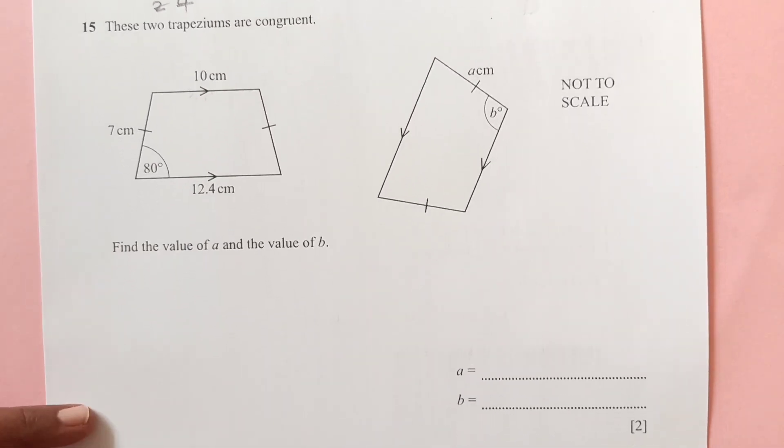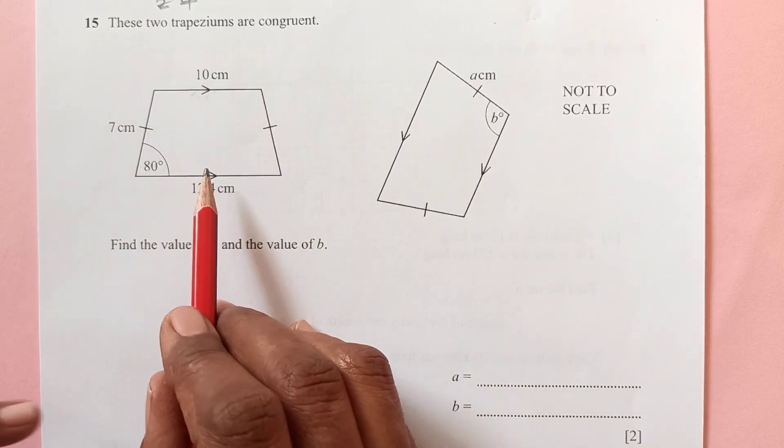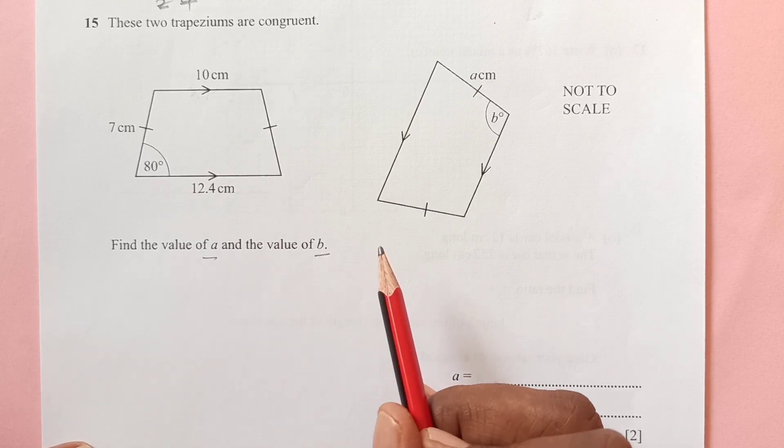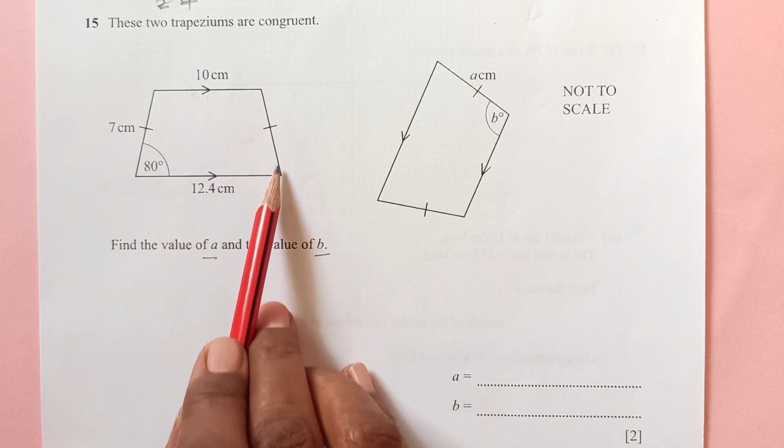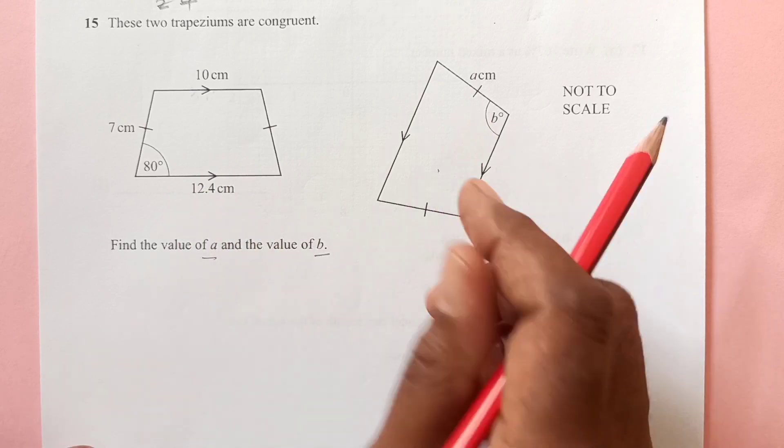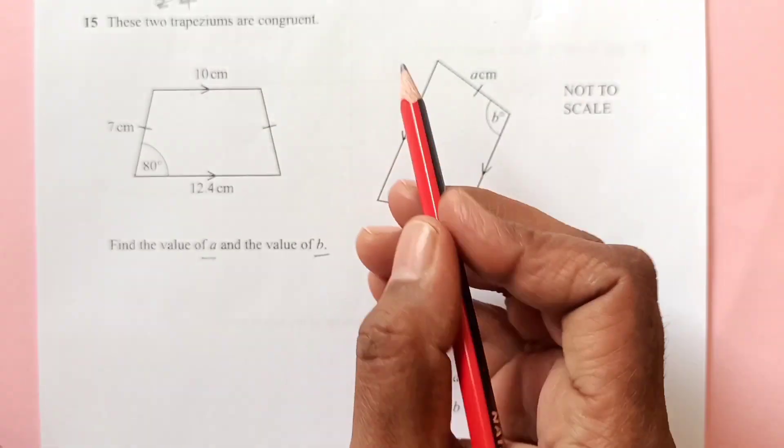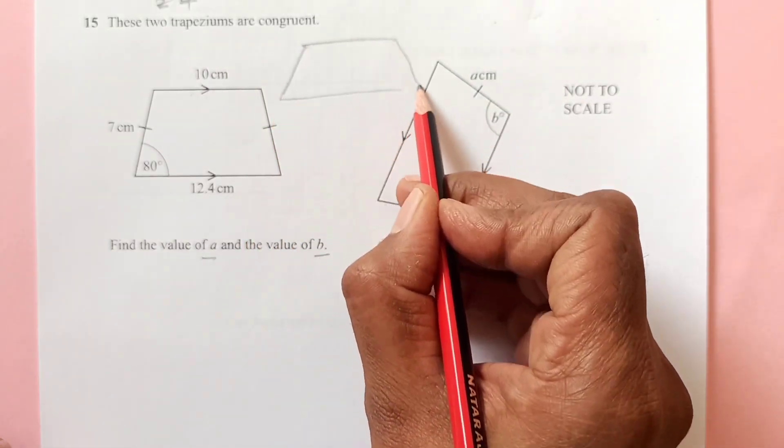Now number 15. These two trapeziums are congruent. Find the value of A and B from the diagram. So these two trapeziums are congruent, meaning their angles and sides are same. So this is moved this way. If I make it this way the way the other one is, then you can compare this.